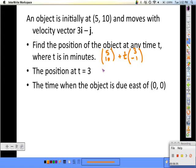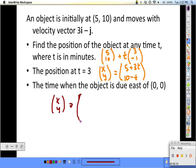So (x, y) can be given by (5 plus 3t, 10 minus t). To find the position at t equals 3, we're just going to plug in 3 to each of these things. So the new position after 3 seconds is (14, 7).